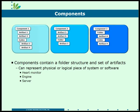Before global configuration or configuration management in DNG, your entire folder structure for a DNG project was at the project level. You now have the ability to break that project into multiple components, and each component will maintain its own folder structure. You can now group the folders that contain information for different physical or logical pieces of your system or software.